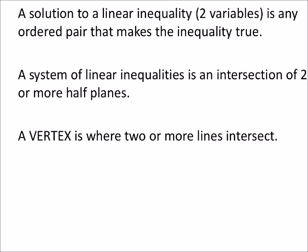A system of linear inequalities is an intersection of two or more half-planes, which is why we shade them and make it look pretty. A vertex is where two or more lines intersect. It's just the point of intersection.